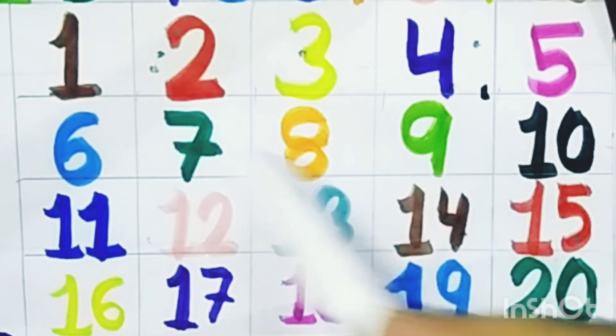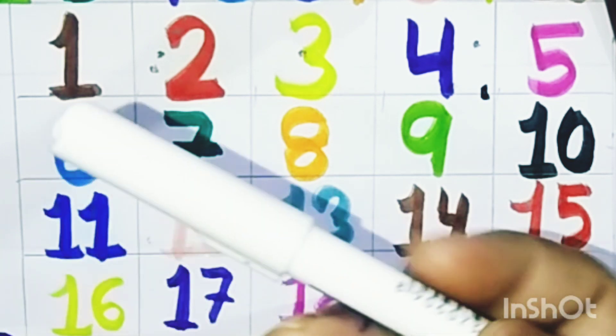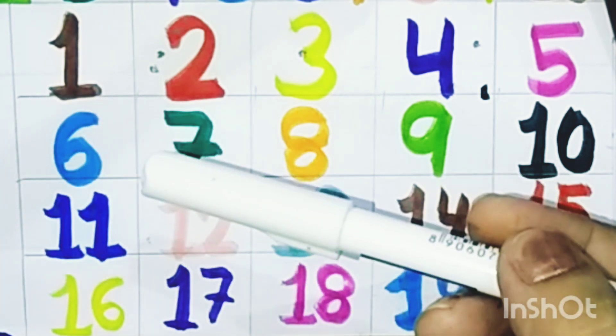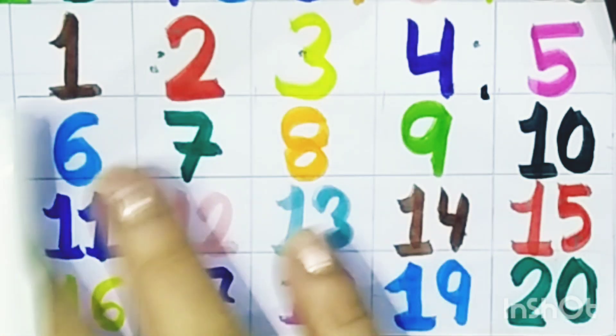Today we learned 1 to 20 counting and the colors name, and this is white color. Thank you for watching. We meet in next video. Please share, subscribe, like my channel. Bye bye!